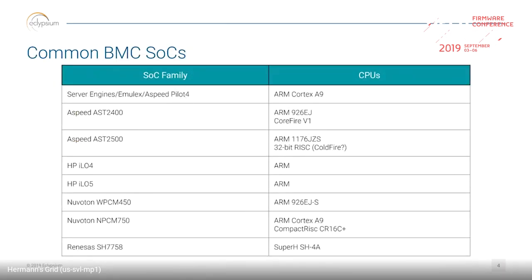These are just some of the common SOCs in use — some more recent than others. There's only a handful of vendors that actually produce silicon for BMCs. Most people are familiar with ASPEED, as that's pretty widely used. HP actually makes their own silicon, and Nuvoton also has products out there. Most of these are ARM-based and do also have coprocessors in some of them, so you end up with a mishmash of CPU architectures.